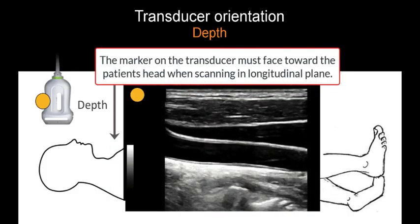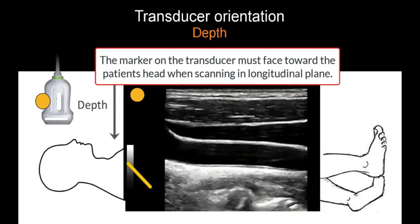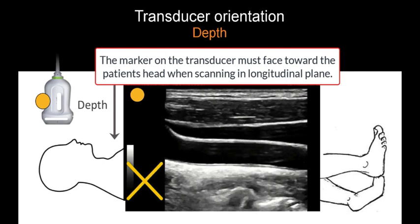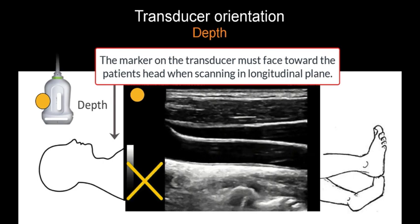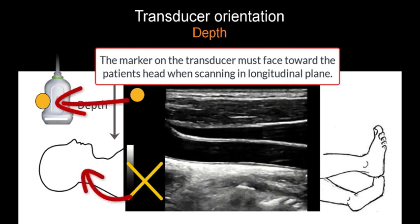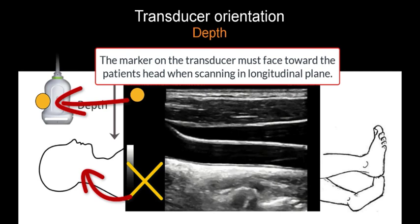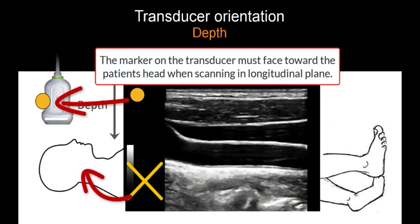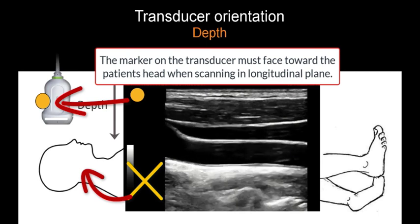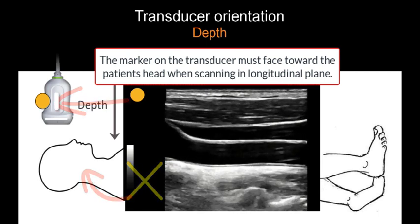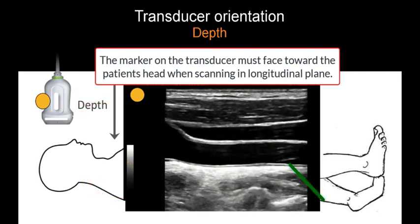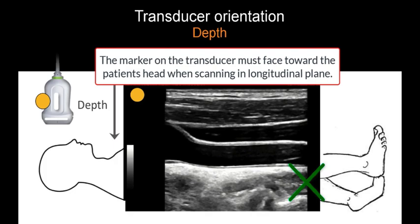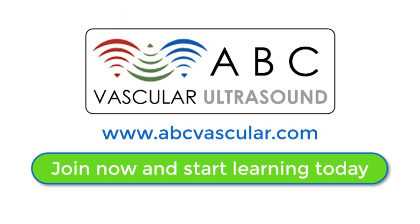In the longitudinal plane, the transducer will be placed with the marker facing the head of the patient. Therefore, all the structures on this side of the screen will be proximal, and all the structures on the other side of the screen will be distal.